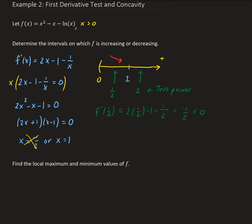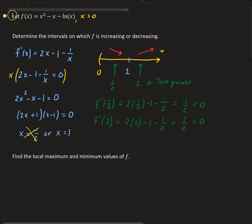Now we're going to evaluate the other test point. We plug 2 into the first derivative: 2 times 2 minus 1 minus 1 over 2, which gives us 5 halves, which is greater than zero. So that means on the interval from 1 to infinity, our function is increasing.